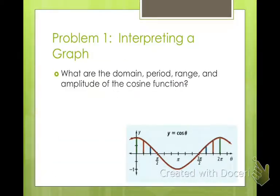Interpreting a graph. What are the domain, period, range, and amplitude of the cosine function? Remember, domain represents all x values. So if we look at x values, those are these values from left to right. Do we have any restrictions? Well, since we have arrows pointing both directions for forever, the domain is all real numbers.